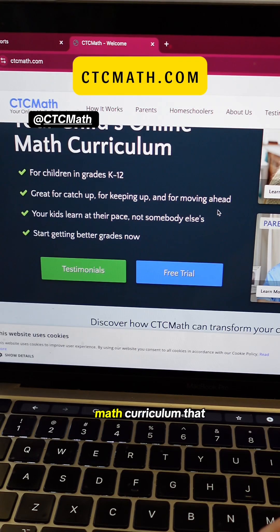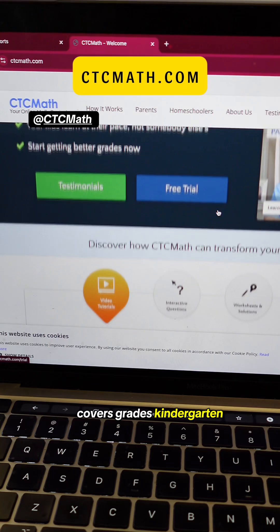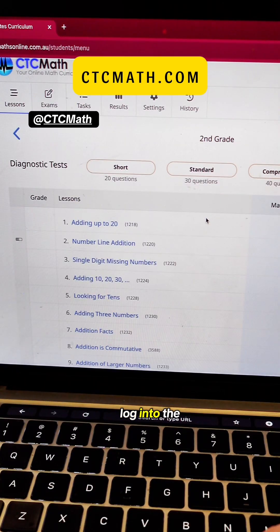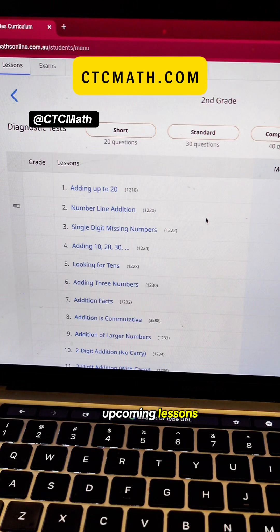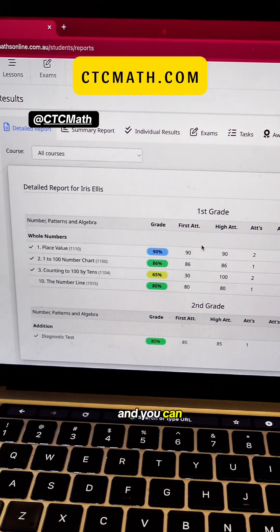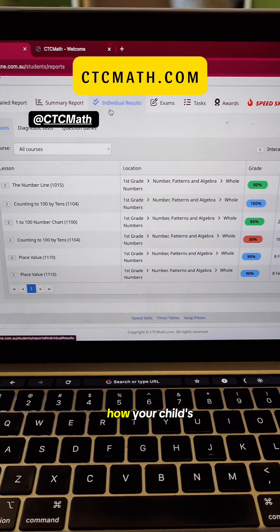CTC Math is a fully online math curriculum that covers grades kindergarten all the way to 12th grade. So when you log into the student dashboard, you'll see the upcoming lessons, your child's progress, and you can even access detailed reports to see how your child's doing.